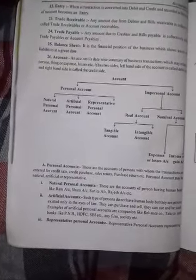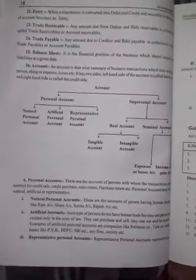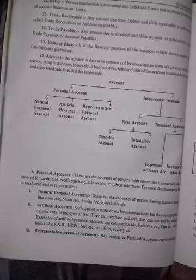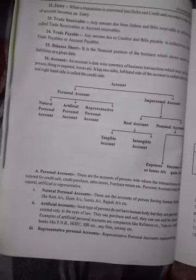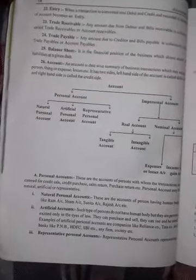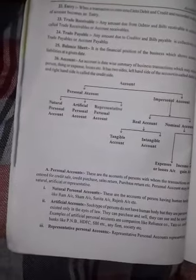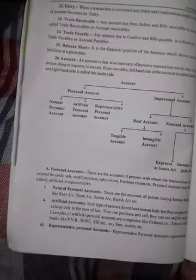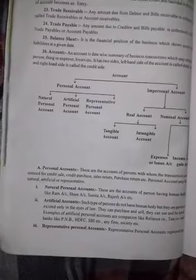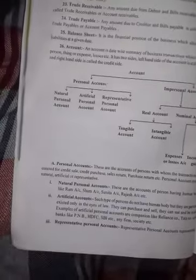First point is natural personal account. These are the accounts of persons having a human body, like Ram, Shah, Mohan, Sohan. It is of human body nature. For example, we sold goods to Ram, then we debit Ram's account and credit the sales account. Ram's account is a personal account.